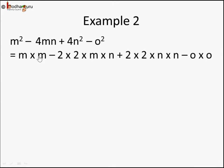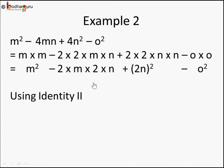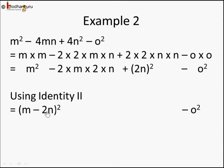Write each term as a product of factors: m² = m×m, 4mn = 2×2×m×n, 4n² = 2×2×n×n, and o² = o×o. Rearranging, we see 4mn = 2m × 2n and 4n² = (2n)². The first three terms m² - 2(m)(2n) + (2n)² match Identity 2: a² - 2ab + b² = (a-b)², with a = m and b = 2n. So the first three terms simplify to (m - 2n)², and we keep - o² as is.